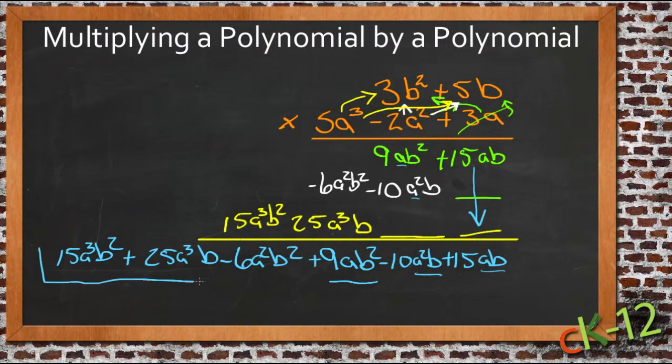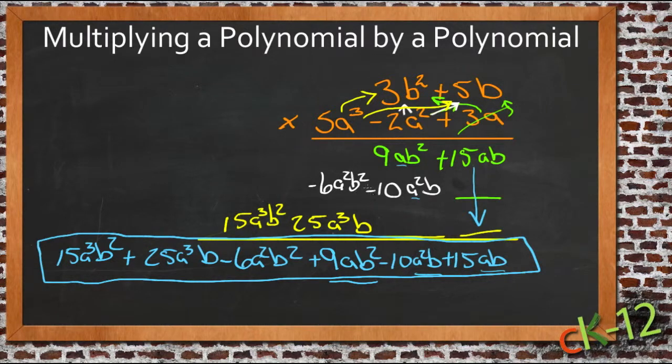Our polynomial is really long by the time we get to the end, but we really didn't have to do anything particularly difficult. We just did monomial times monomial over and over again. And this format helps us keep it straight so we don't get lost about which ones we multiply and which ones we haven't.